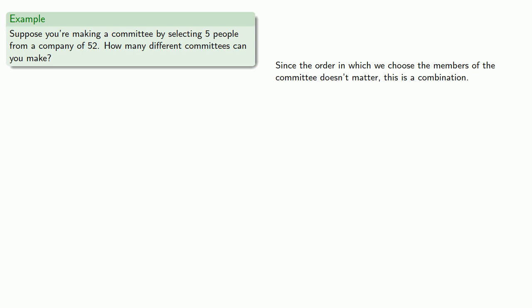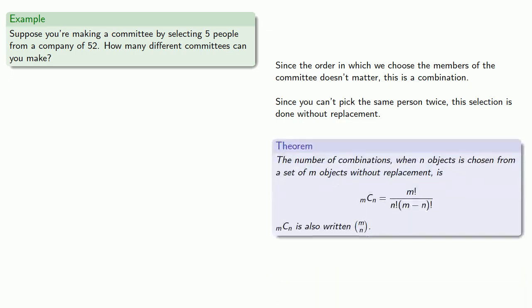But what if we use our formula? Remember, we can't use our formula until we determine that we're doing our selection without replacement. That's an additional verification step we have to make. And so since you can't pick the same person twice, this selection is done without replacement, and our formula is relevant.